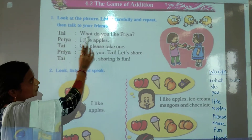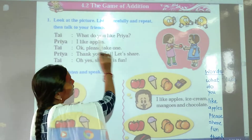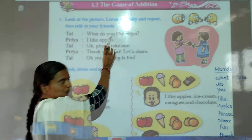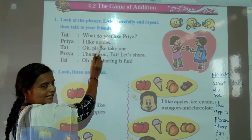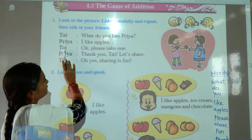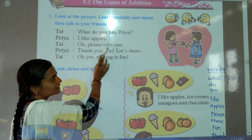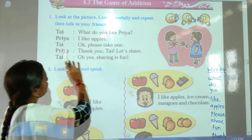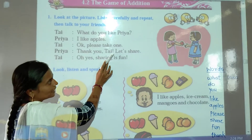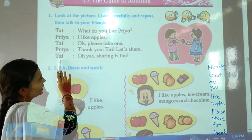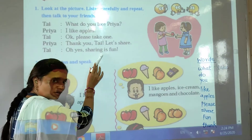Thai says, what do you like Priya? Priya says, I like apples. Thai says, okay, please take one. Then Priya says, thank you Thai. Let's share. Thai says, oh yes, sharing is fun.